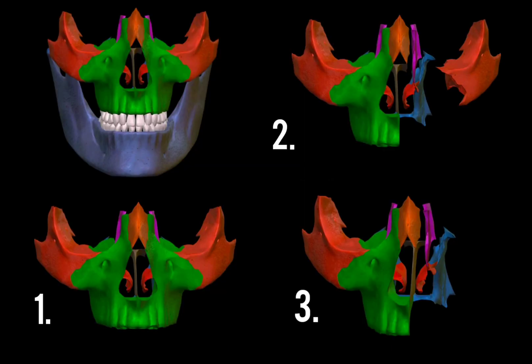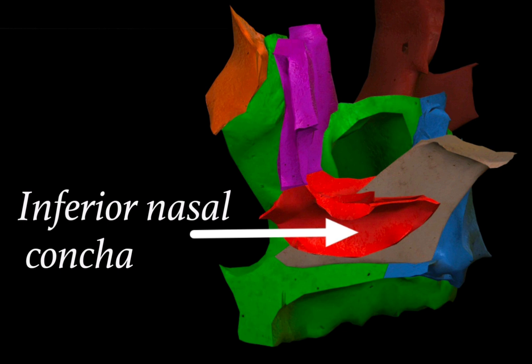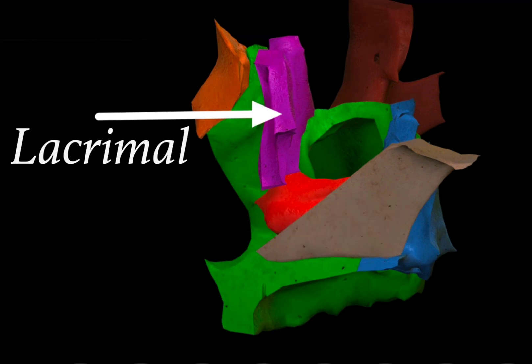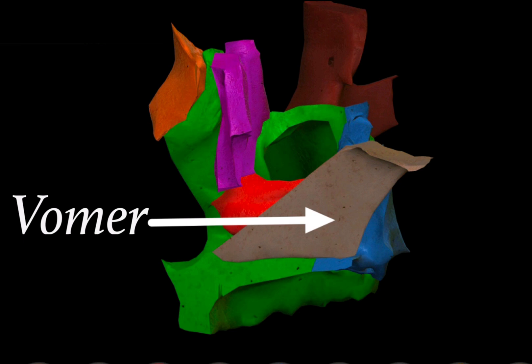Now we will view how the facial skeleton looks as we remove bones one by one. In the first figure we remove the mandible; in the second, we remove both the mandible and the maxilla and zygomatic bone from one half of the face. From the anterior and lateral aspect we find the blue-colored palatine bone. Anteriorly to the palatine lies the red inferior nasal concha, and superior to it is the purple lacrimal bone. Below the lacrimal is the inferior nasal concha, and then the palatine bone, with the vomer bone also visible.